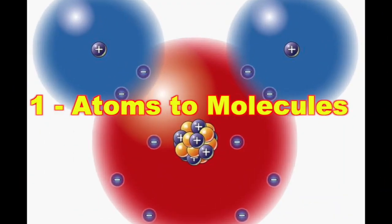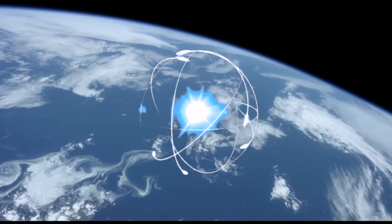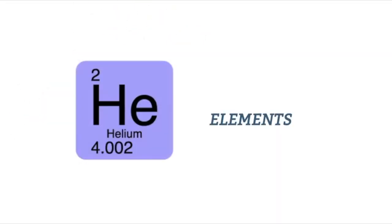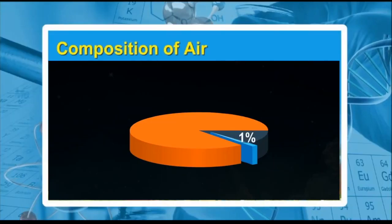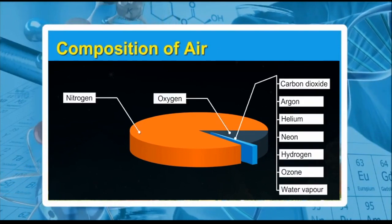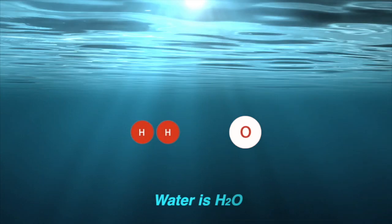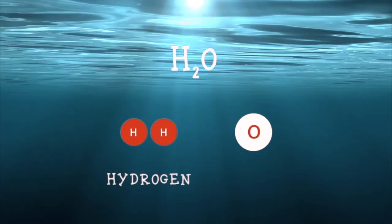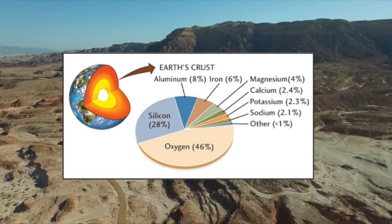Atoms to Molecules. The earth and everything on it are made of atoms. Atoms that are all the same are called elements. Everything around us is made of only about 100 elements. Air is a mix of these atoms. Atoms also join to make molecules. Water is H2O — a molecule made of two hydrogen atoms and one oxygen atom.